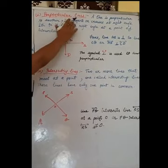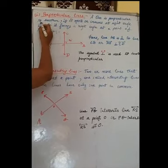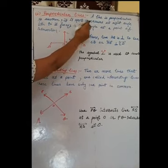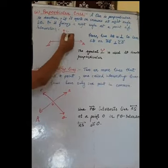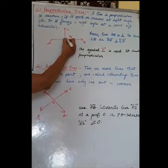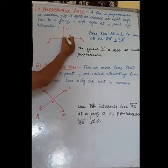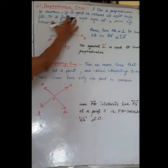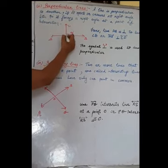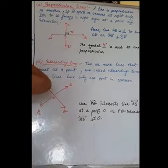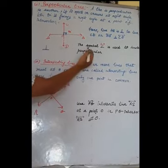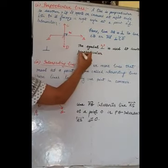Next is perpendicular line. A line is perpendicular to another if it meets or crosses at right angle. See, AB and CD, they meet at right angle. So, if they meet at 90 degrees, then these lines are called perpendicular lines. They form 90 degree at the point of intersection. And they are represented by this symbol.